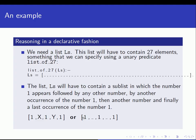What is also clear is that the list LS will have to contain a sub-list in which the number 1 appears, followed by any other number, then another occurrence of the number 1, then another number, and finally a last occurrence of the number 1. So it has to have 1, then a wildcard, then 1, then a wildcard, then 1 after that. The list definitely will have to have this sub-list, because I'm demanding that there is exactly one element between occurrences of the number 1.